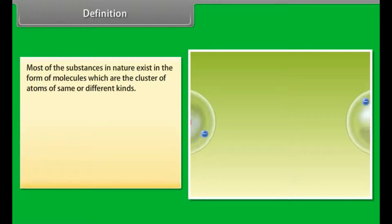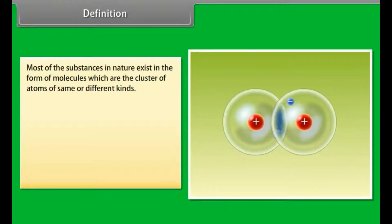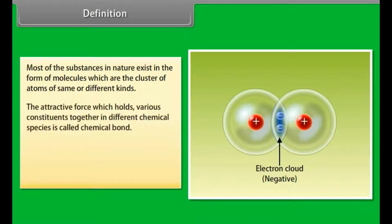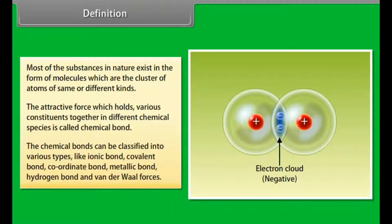Definition. Most of the substances in nature exist in the form of molecules, which are the cluster of atoms of same or different kinds. The attractive force which holds various constituents together in different chemical species is called chemical bond. The chemical bonds can be classified into various types like ionic bond, covalent bond, coordinate bond, metallic bond, hydrogen bond, and Van der Waal forces.